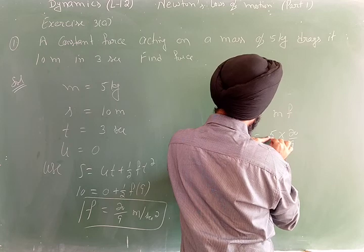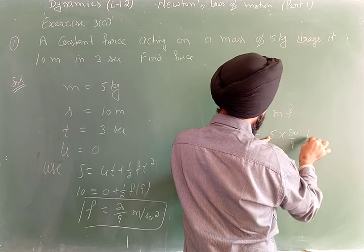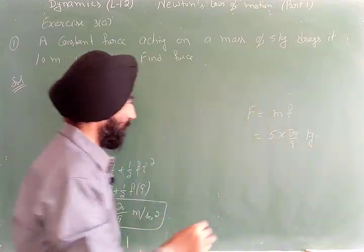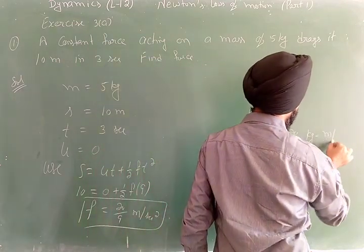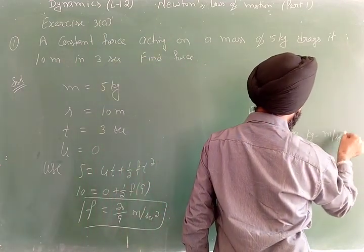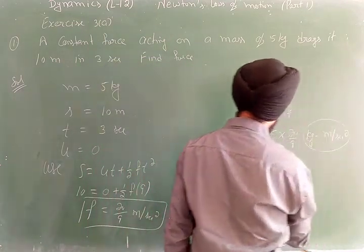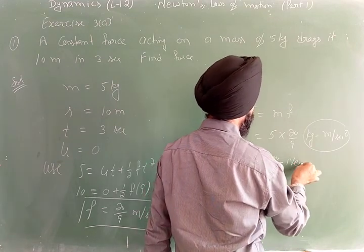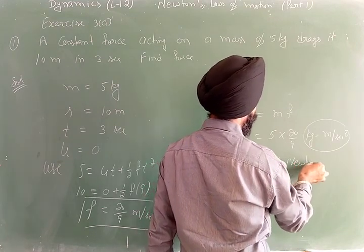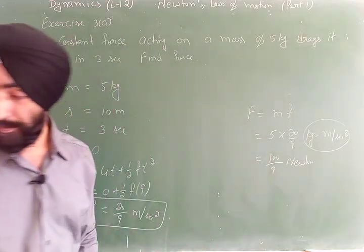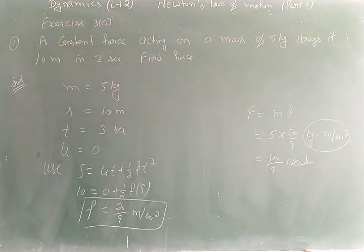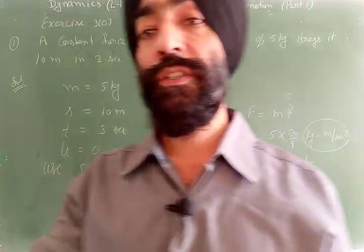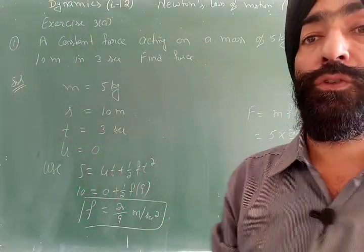The value of acceleration is 20/9 meters per second squared. Therefore force F = 5 × (20/9) = 100/9 Newtons. The answer is 100/9 N.